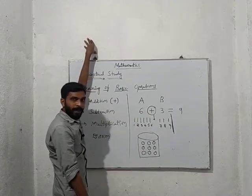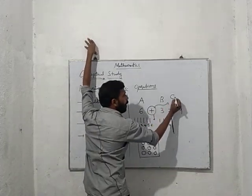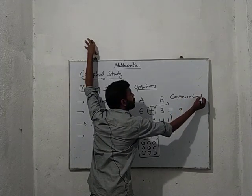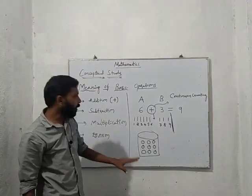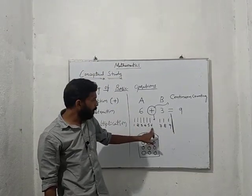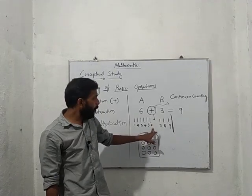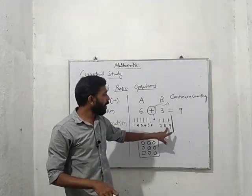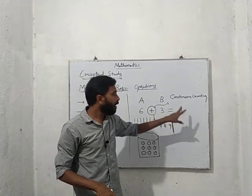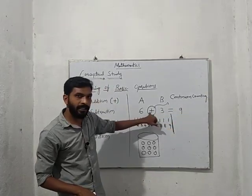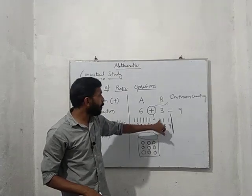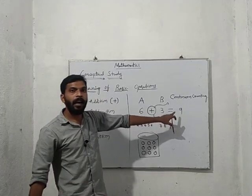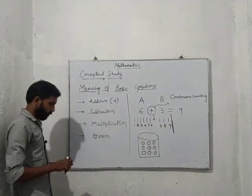So I can conclude that the meaning of addition — the plus symbol — is continuous counting. Up to six we count, then instead of starting over from one, we continue: seven, eight, nine. The plus symbol inside a problem indicates to count continuously — don't stop and don't restart — count continuously till the end to get the final answer.